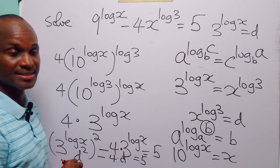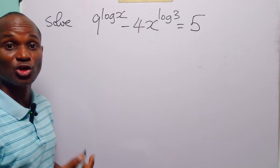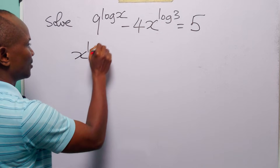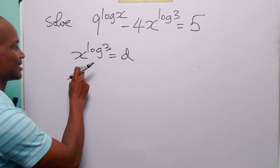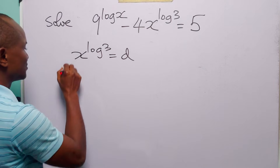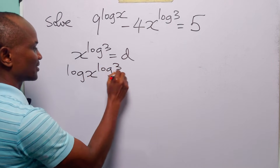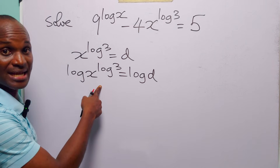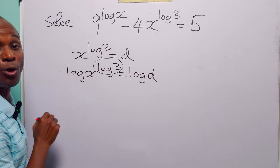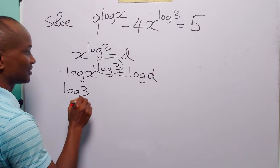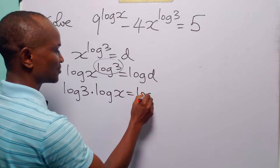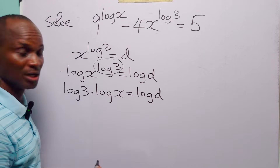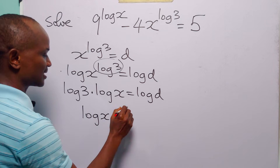Whichever substitution you decide on will lead to the same answer. If you decide that x to the power log 3 equals d, then to find x we take log of both sides: log of x to the power log 3 equals log d. Applying the power rule, we bring down the exponent as a multiplier: log 3 times log x equals log d. To find log x, divide both sides by log 3.